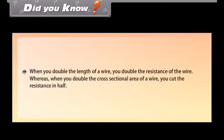Did you know? When you double the length of a wire, you double the resistance of the wire. Whereas, when you double the cross-sectional area of a wire, you cut the resistance in half.